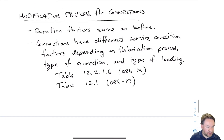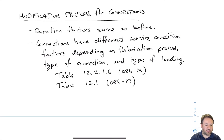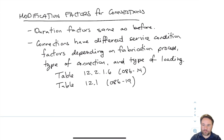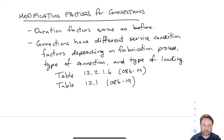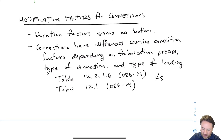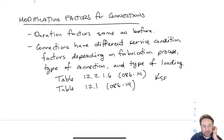Now for modification factors in connections: we talked about KD, the duration factor, which is the same as before — it depends on the duration of loading. KH does not apply in the same way, but we do have service condition factors — KS factors. For fasteners, we have KSF, the service condition factor for fasteners, which is found in a separate table in Chapter 12, which is where all connection design details are in the standard.